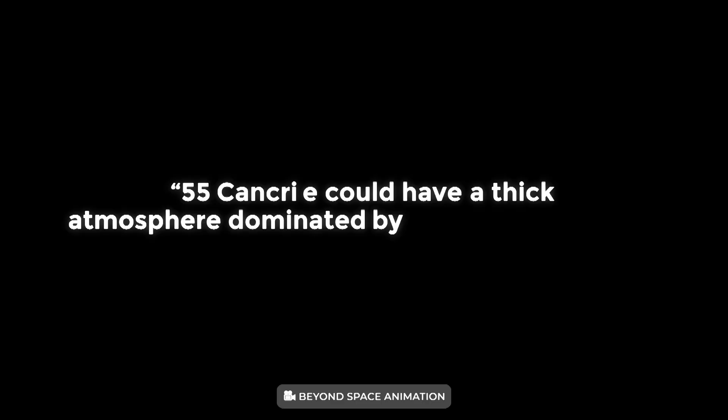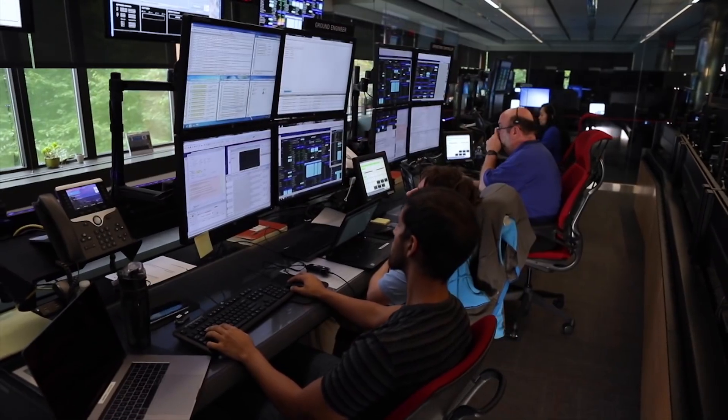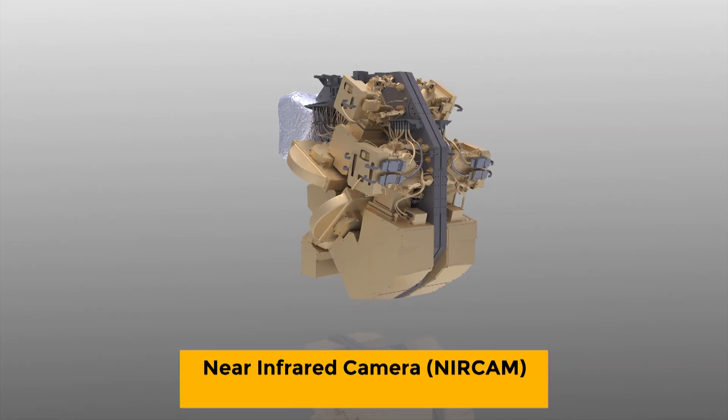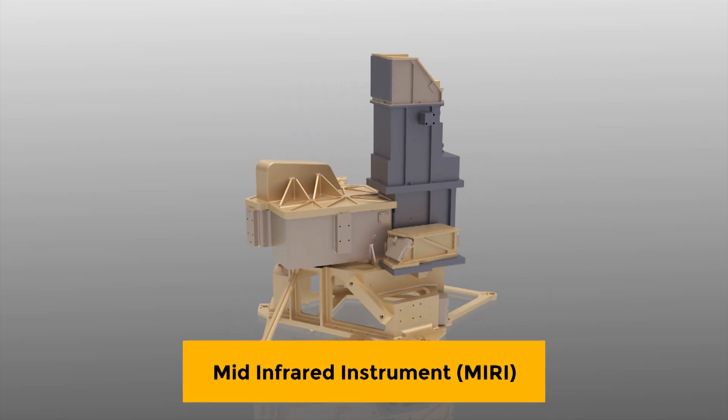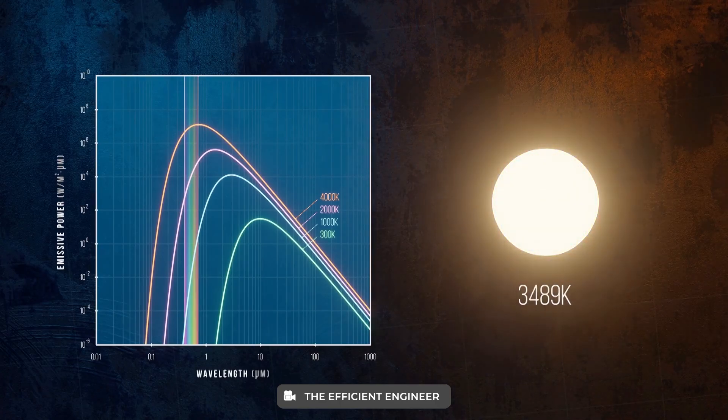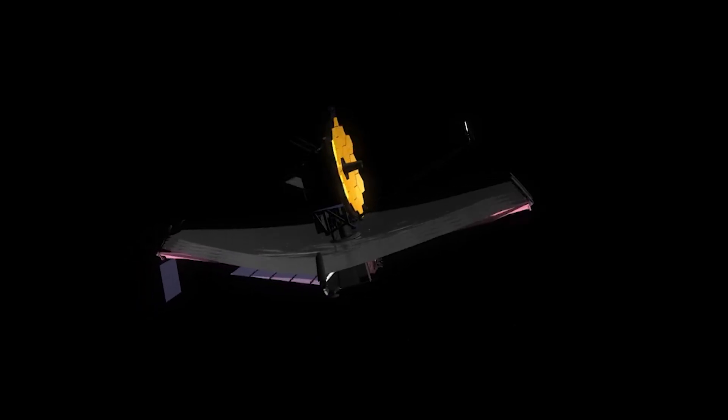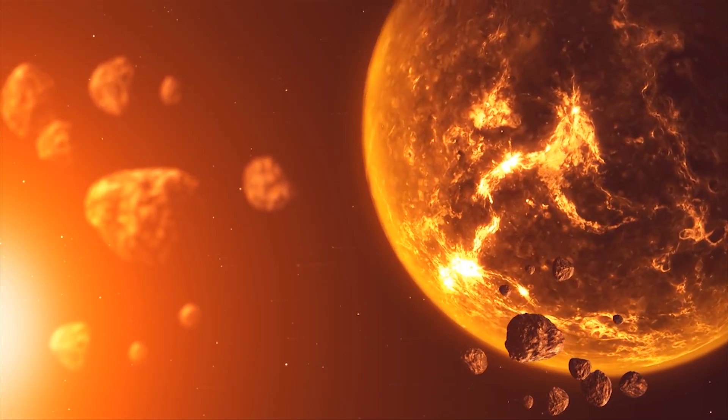55 Cancri e could have a thick atmosphere dominated by oxygen or nitrogen, explained Renyu Hu of NASA's Jet Propulsion Laboratory in Southern California, who leads a team that will use Webb's near-infrared camera, NIRCam, and mid-infrared instrument, MIRI, to capture the thermal emission spectrum of the day side of the planet. If it has an atmosphere, Webb has the sensitivity and wavelength range to detect it and determine what it is made of.